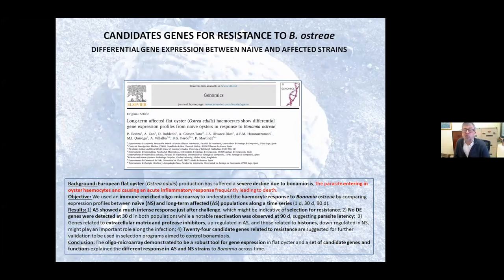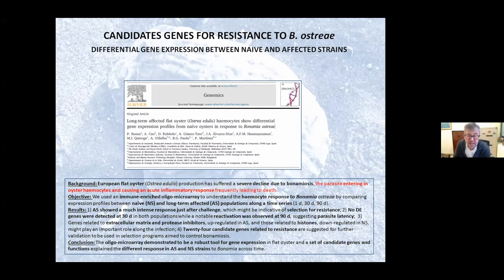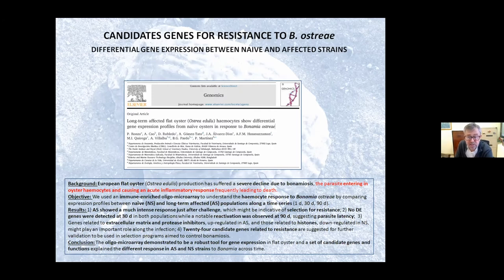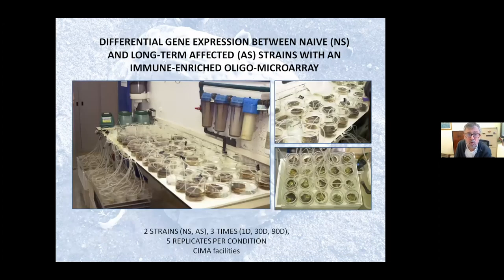We then moved on to try to understand the response of flat oyster to Bonamia ostreae following two different approaches: a functional genomic approach and a population genomic approach. I would like to emphasize that Bonamia is an intracellular parasite that parasitizes the hemocytes, which are the immune cells of the flat oyster immune system, provoking an inflammatory response leading to death, especially when reaching the commercial size, which makes it particularly damaging for producers. I will first talk about the functional genomic approach.